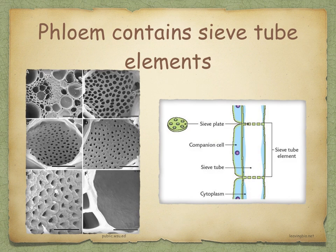Like xylem vessels, phloem tubes are made of many cells joined end to end. However, the end walls have not completely broken down — instead, they form sieve plates, which have small holes in them. The cells are called sieve tube elements. Sieve tube elements contain cytoplasm but no nucleus, and do not have lignin in their cell walls. Each sieve tube element has a companion cell next to it, which does have a nucleus and contains many other organelles. Companion cells probably supply the sieve tube elements with some of their requirements.